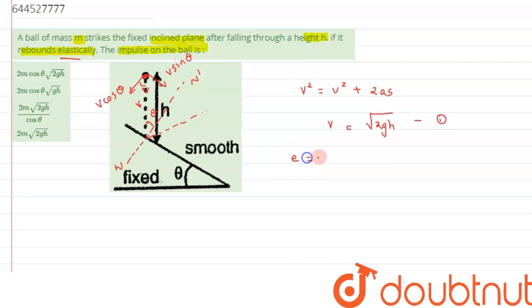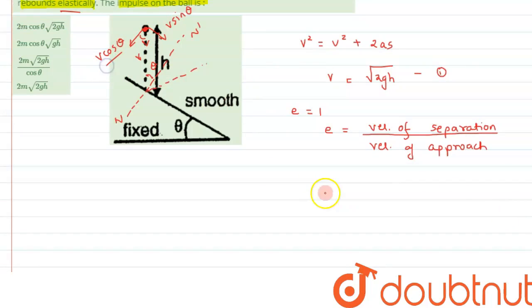So we can say for elastic collision coefficient of restitution is 1. And we know by definition coefficient of restitution is nothing but velocity of separation dividing by velocity of approach. So we can see the velocity with which it is approaching is V cos theta. That is along line of impact. So we can say E is equal to velocity of separation, let's suppose it has to be V dash. So what velocity we are getting is a velocity of approach will be V cos theta over here. Therefore from here we can say V dash we are getting is V cos theta.